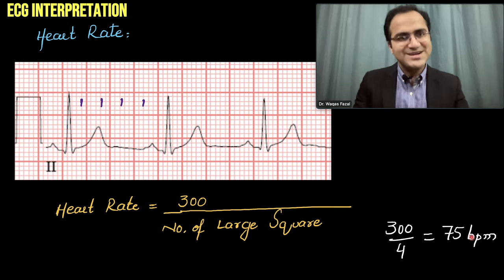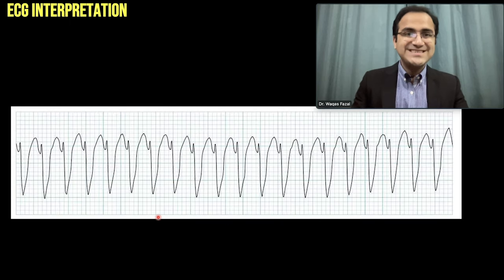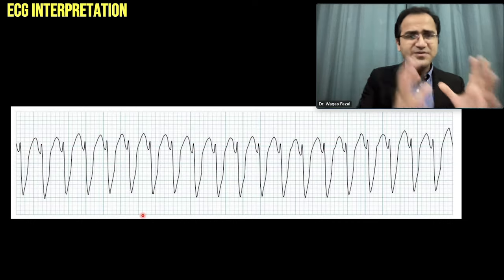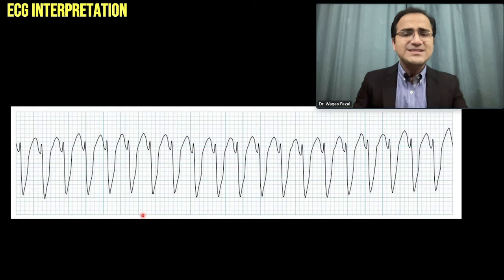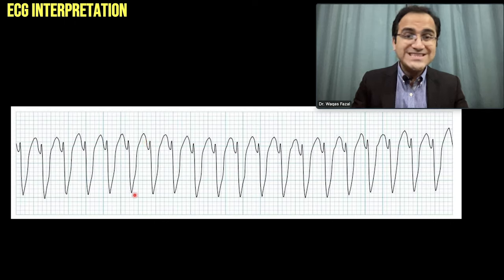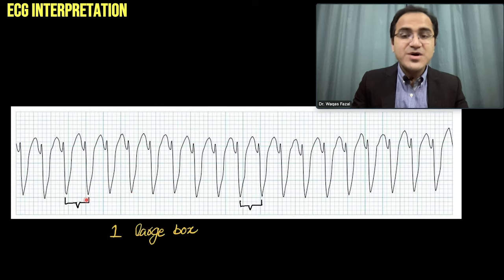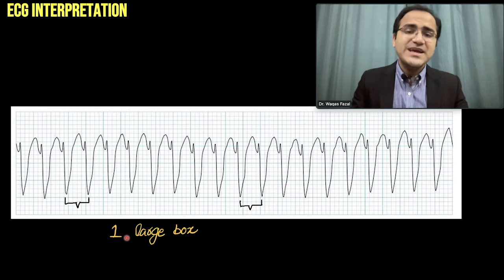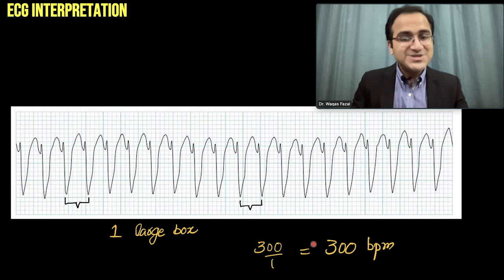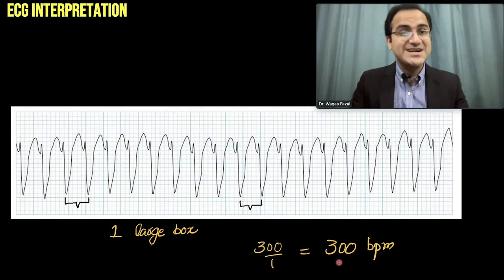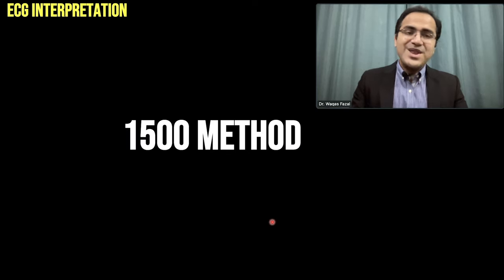Now a more difficult ECG. In such ECGs, look at the point that is clearest — the lower part is typically the QRS complex, and the top is usually the T wave. Taking the lower part, there is almost one large box between these QRS complexes, so 300 divided by 1 gives a rate of 300 beats per minute.